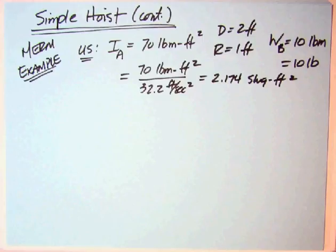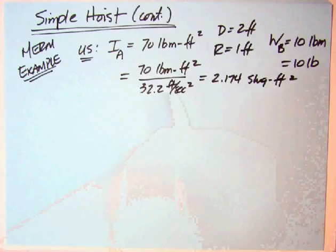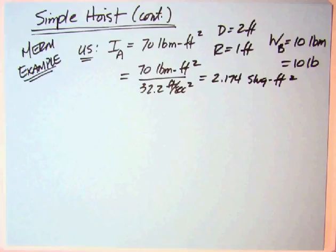Since there are 32.2 pound masses per slug, just divide by 32.2 and get 2.174 slug foot squared.